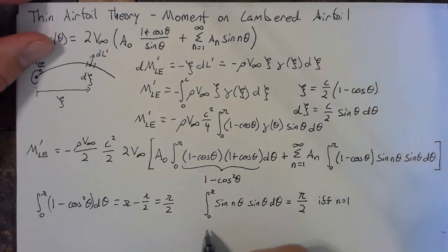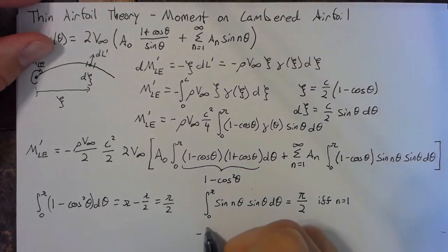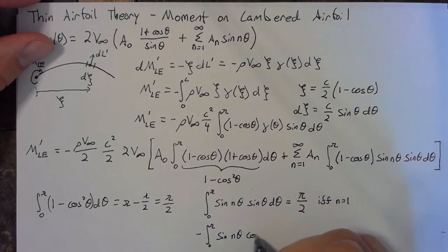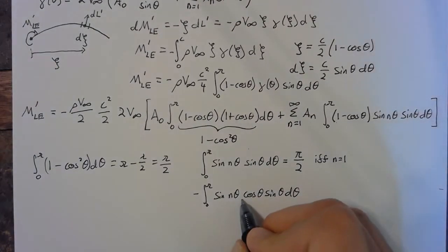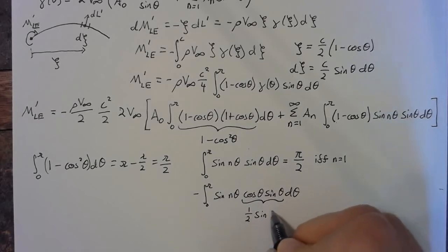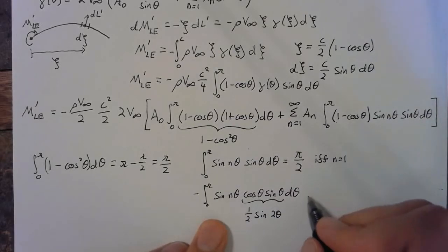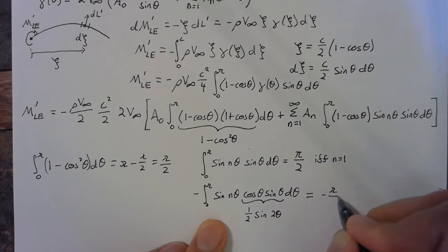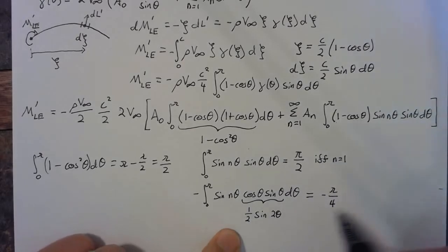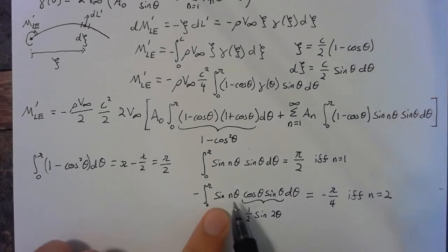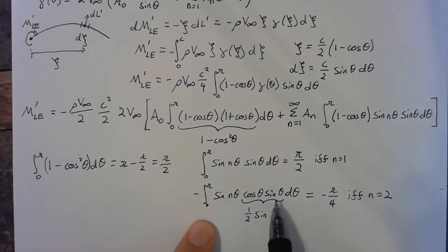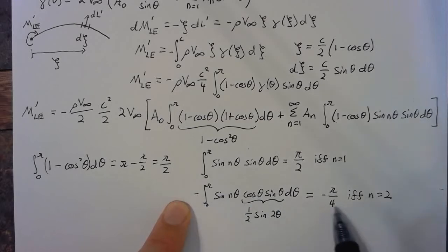We also have the negative integral from 0 to π of sin(nθ) times cosθ sinθ dθ. The key is recognizing that cosθ times sinθ equals (1/2) sin(2θ), which means this evaluates to negative π/4 — incorporating the factor of 1/2 — if and only if n = 2, since we need n = 2 for the integral of sin(2θ) squared to equal π/2. Adding in the negative sign and the 1/2 gives us π/4.